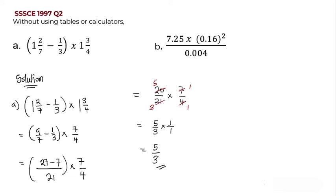It is ideal when doing past questions that if you have an improper fraction, you convert it to a mixed fraction. So five over three: three goes into five one time with a remainder of two, giving one whole number two over three. This is our final answer for part A. It's preferred to leave it as a mixed fraction, so one and two-thirds is our answer.